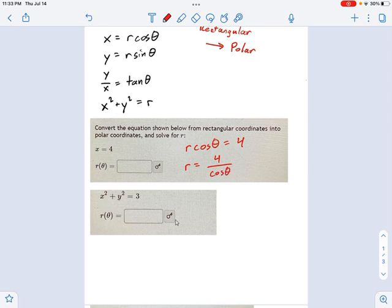If you want, you could write it slightly differently. You could say 4 secant theta, but those are the same thing, and either one works.